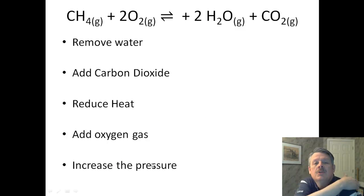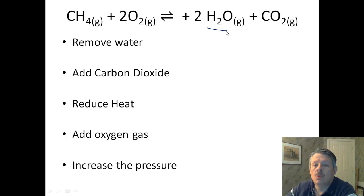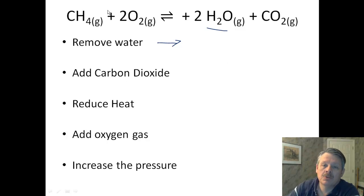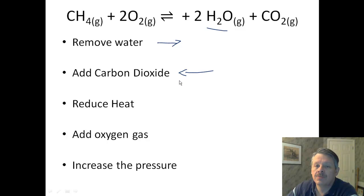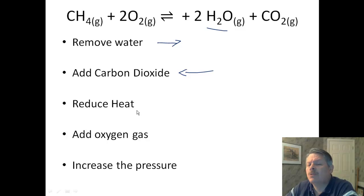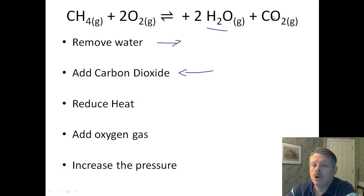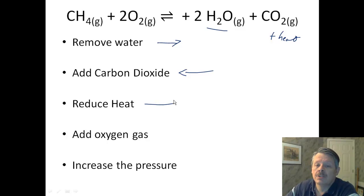Here's another one — pause the video and give it a try. We're removing water: water's on the right-hand side, so we shift to the right. If we add carbon dioxide, we have to move away from that and produce more of the other thing, so we shift left. We reduce the heat — interesting, heat isn't written in here. This is methane gas plus oxygen giving water and carbon dioxide, which is a combustion reaction. All combustion reactions have heat on the right. So if we reduce heat — take the heat away — we want to produce more heat, so this shifts to the right. That was a hard question.